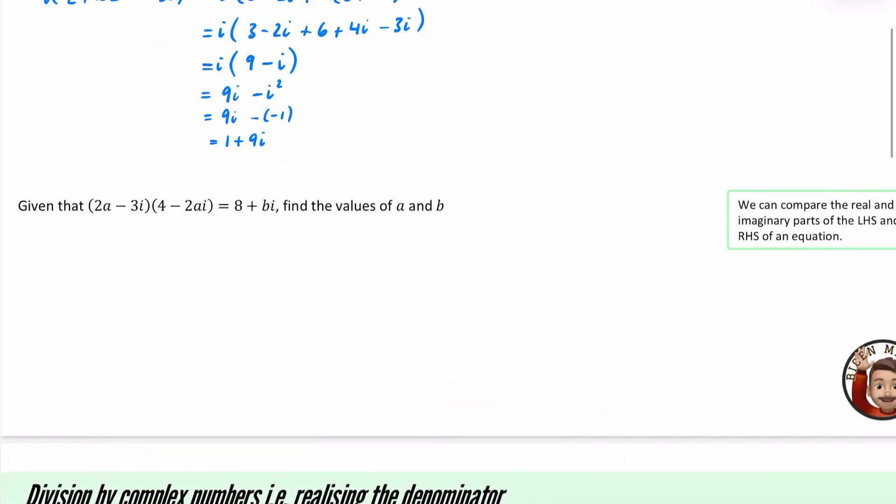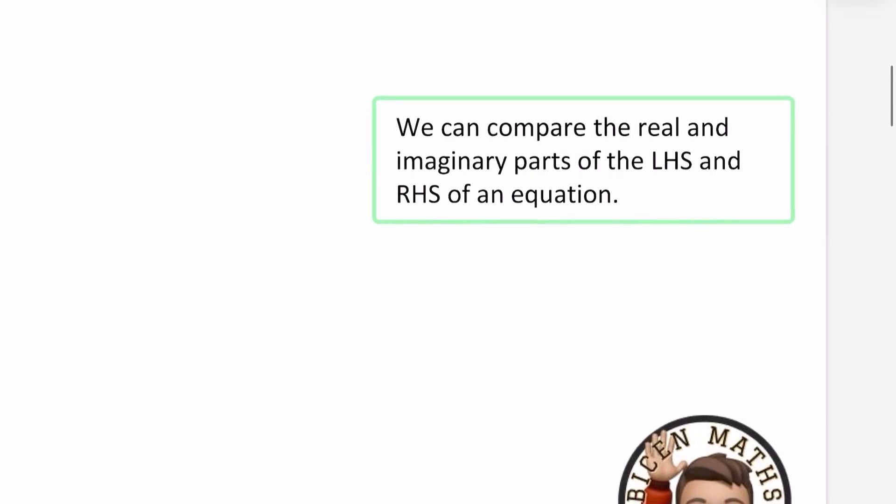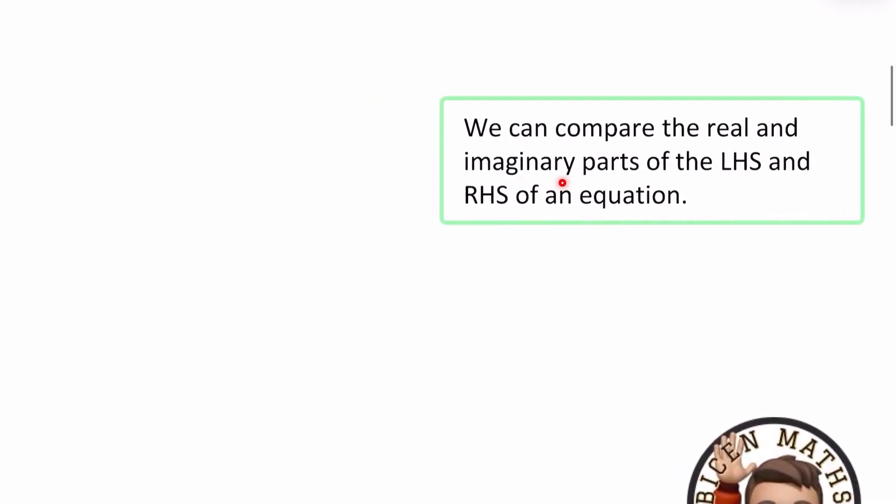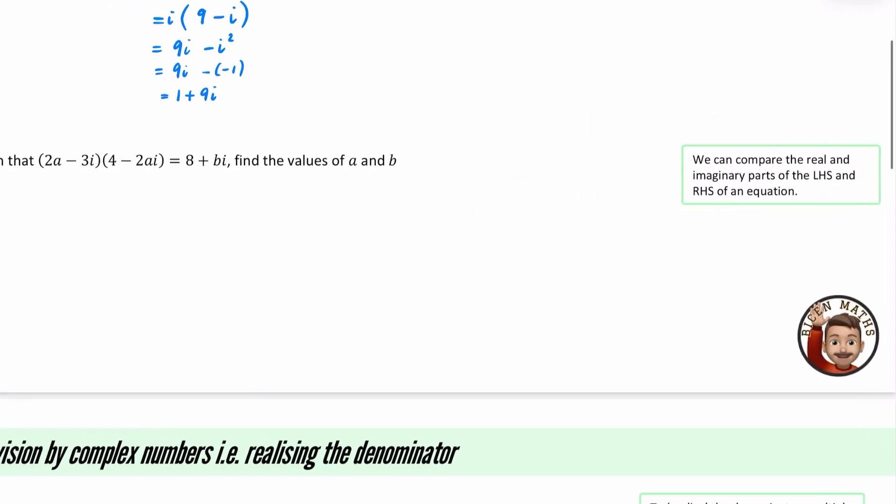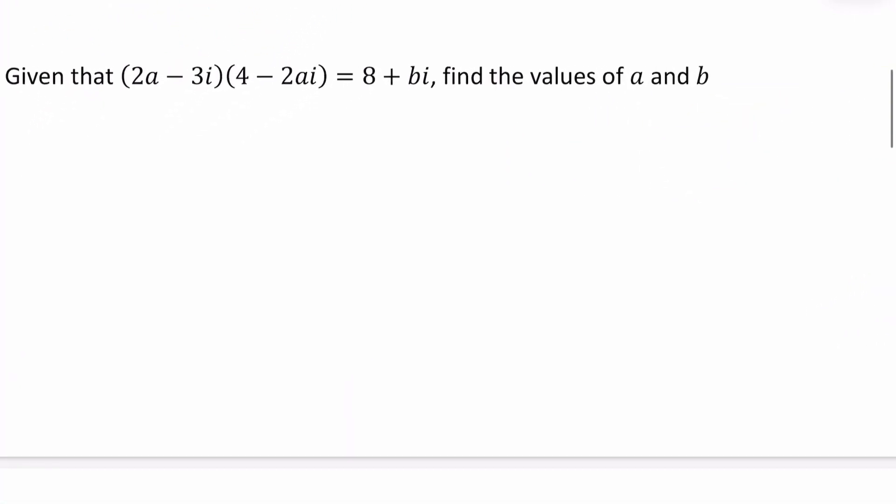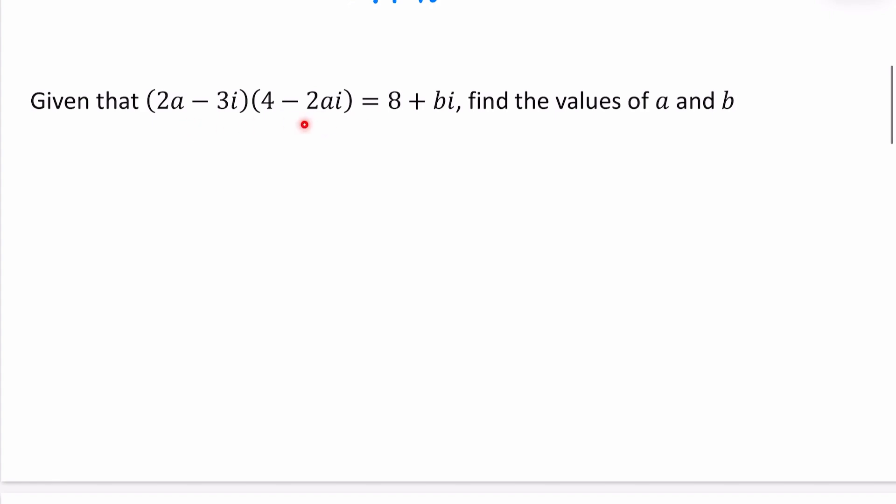So we're now going to have a look at a different kind of question. And in this box here, I've got a little reminder for us that we can compare the real and imaginary parts of the left-hand side and the right-hand side of an equation. So we have been told that this thing here, when it expands, it is equivalent to 8 plus bi, and we're going to find the values of a and the values of b.